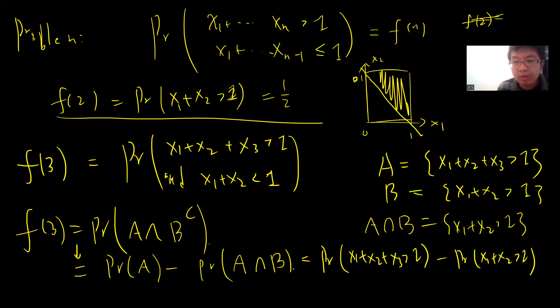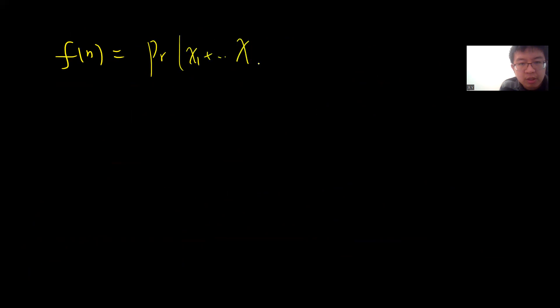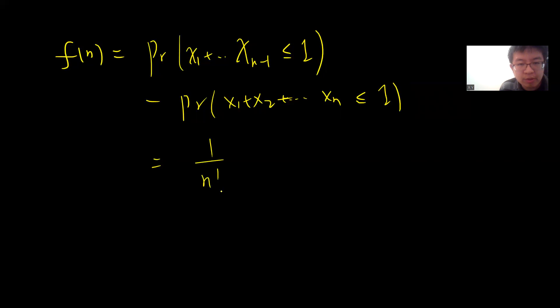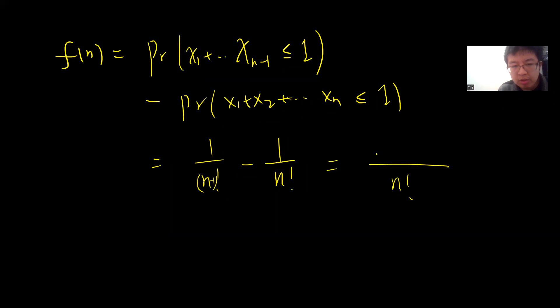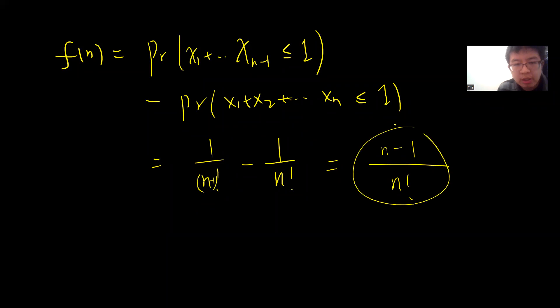In general, using the same recursive argument, f(n) equals P(X1+...+X(n-1) ≤ 1) minus P(X1+...+Xn ≤ 1), which is 1/(n-1)! minus 1/n!. Factoring, this is (n-1)/n! minus — wait, simplifying: it equals (n−1) · 1/n! = (n−1)/n!.